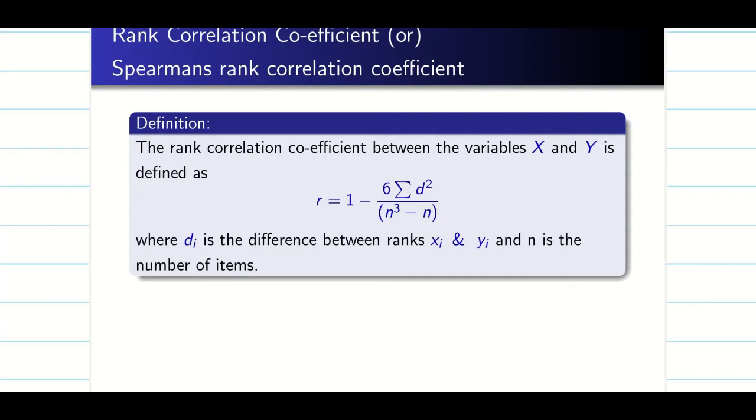di is the difference between the ranks of xi and yi. For two given data, first we create the rank in descending order and take the difference between two ranks.